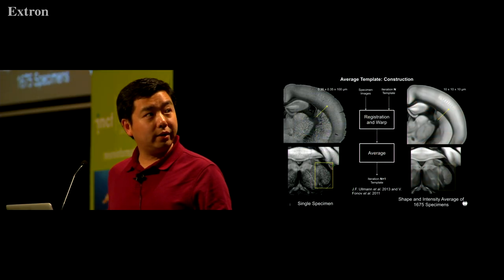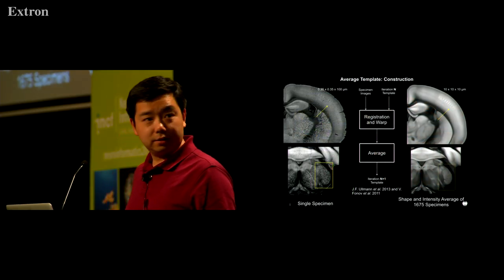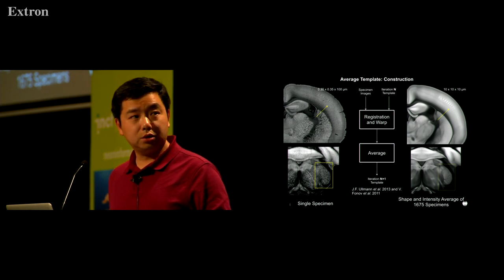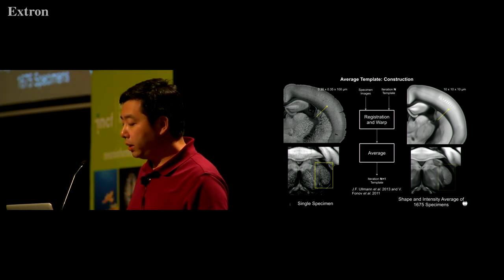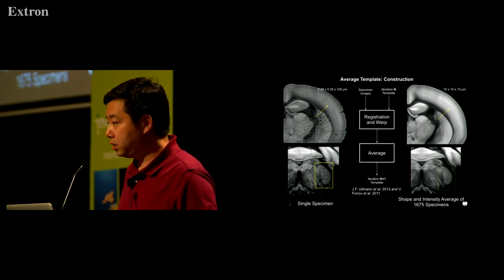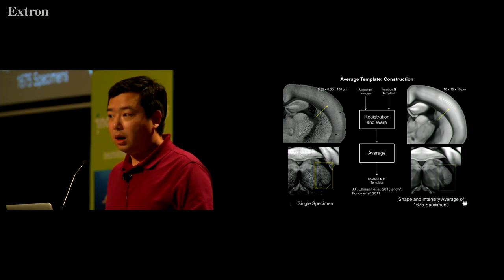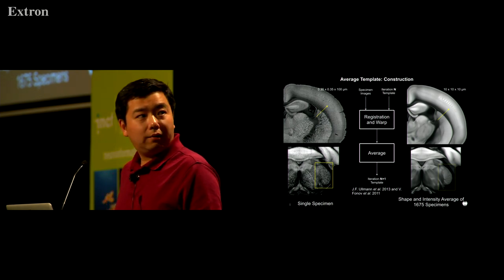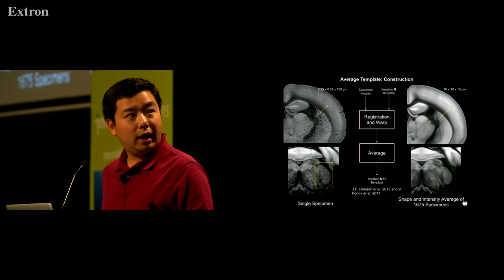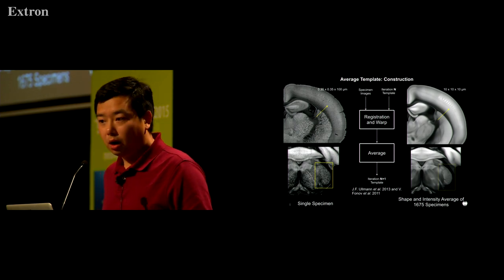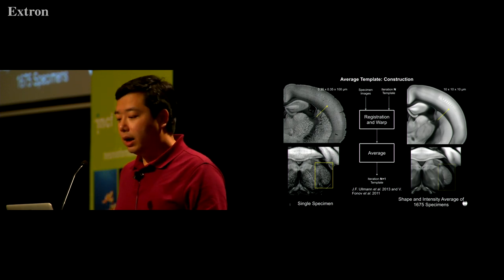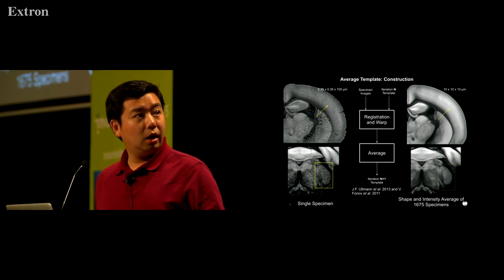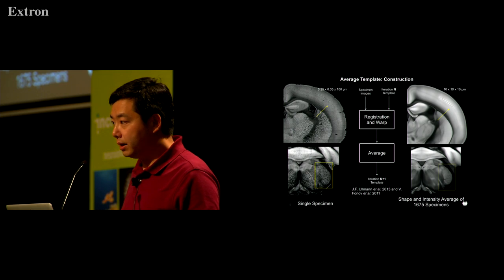We start atlas construction by using the version 2 atlas as the initial template. We then register all other brains to that template using fine registration first. After registration is done, we average the warped images to get the average template for the next iteration, and we repeat this until there is little change in that template.